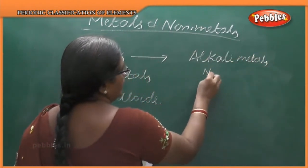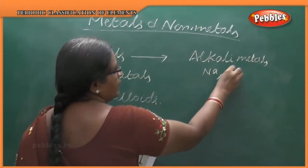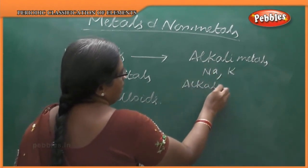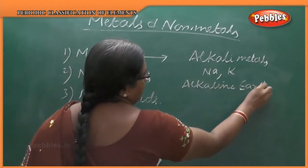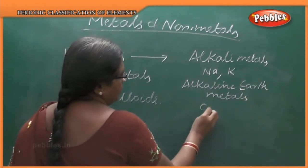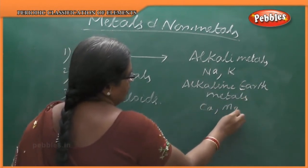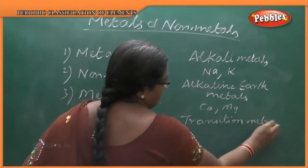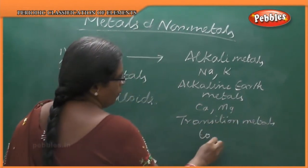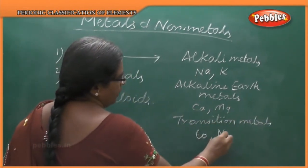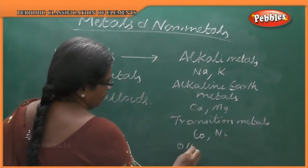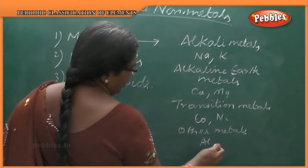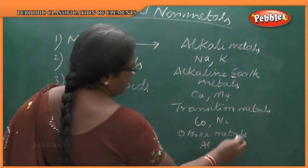Metals are further classified as alkali metals — examples: sodium (Na) and potassium (K); alkaline earth metals — examples: calcium (Ca) and magnesium (Mg); transition metals — examples: cobalt (Co) and nickel (Ni); and other metals — examples: aluminium (Al) and tin (Sn).